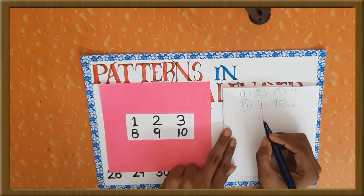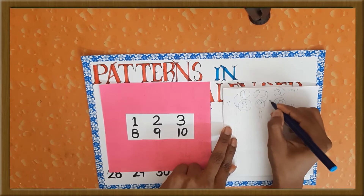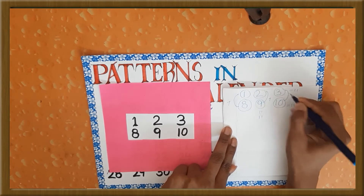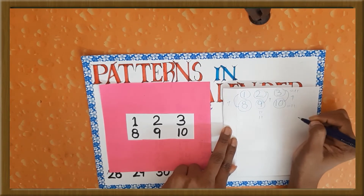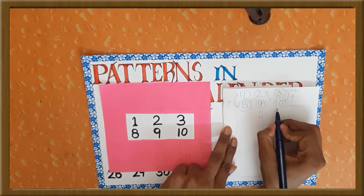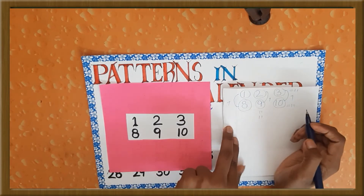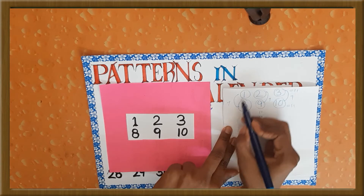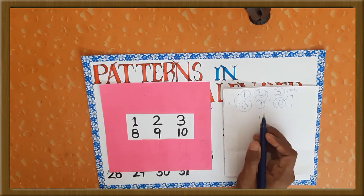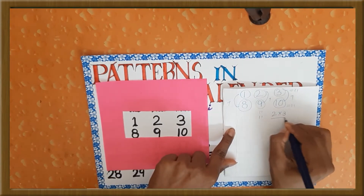8 minus 1 is 7. 9 minus 2 is 7. And 10 minus 3 is also 7. And these numbers are obviously also in order. So there are many patterns in this small 2 by 3 matrix.